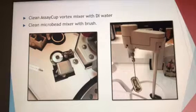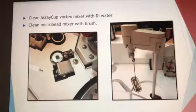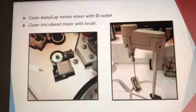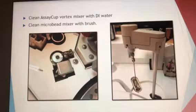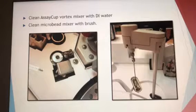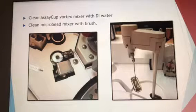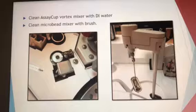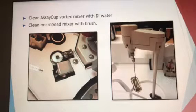For the assay cup vortex mixer, clean it with DI water using gauze or a cotton tip applicator — it's the little silver circle in the first picture. For the micro bead mixer, use the paint brush we discussed earlier, the one used for dusting. Gently go over it with the brush and be very, very careful not to bend it, because bending it can cause a lot of issues.